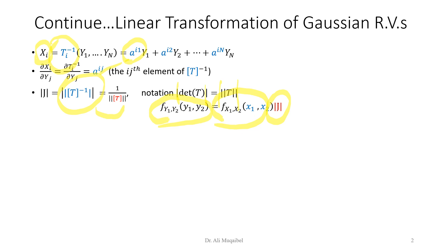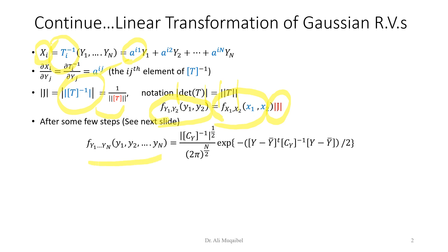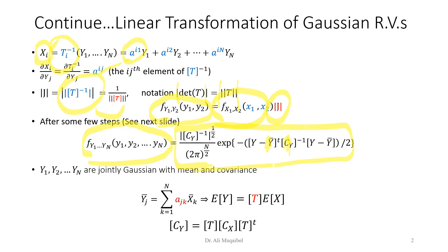This is for the two random variable case, and we can generalize for multiple random variables. After a few steps, we can show that the output of a linear transformation of Gaussian is also Gaussian. For any Gaussian, we need to know the mean and variance for a single random variable, or the covariance for multiple random variables. The output Gaussian is characterized by Y-bar and Cy. The two key equations are: Y-bar equals T times X-bar, and the covariance Cy equals T times Cx times T-transpose.